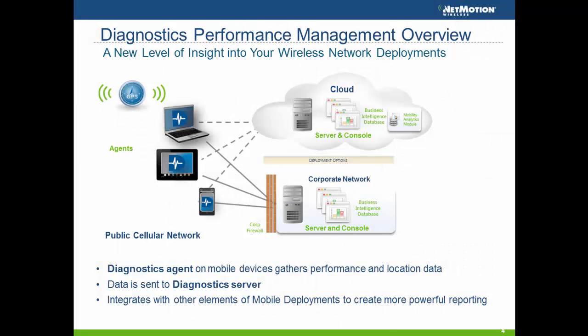So how does it work? There is an agent installed on every device. We support all major operating systems. The agent every five seconds takes a snapshot of information on everything happening on the device — it looks at the cellular carrier, signal quality, details of the signal quality, and even the firmware of the air cards running on the device. If GPS is available, it will also grab GPS information. Every 30 minutes it sends this data up to a console where the administrator can see a rich suite of reports into how their mobile deployment is performing.